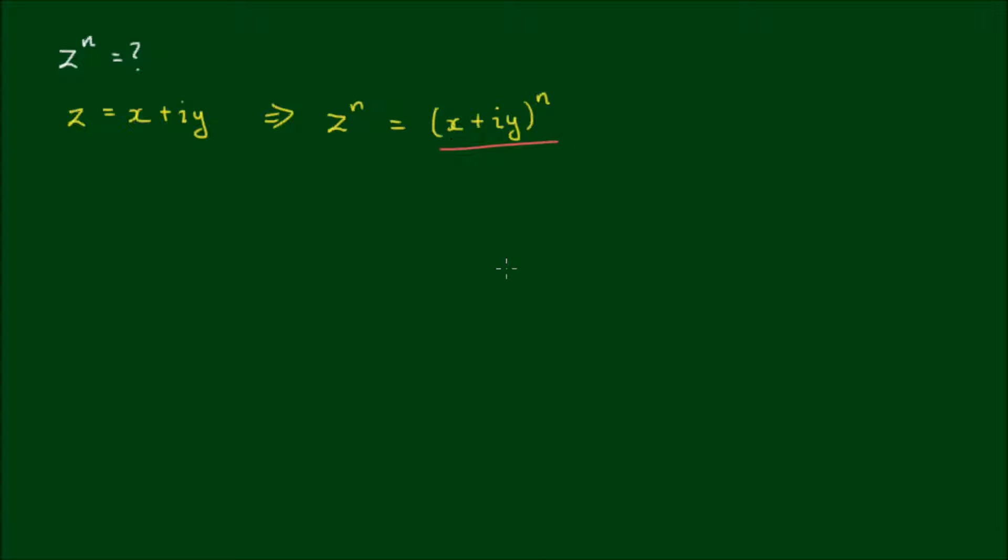And to evaluate this, I would have to perform binomial expansion. So x plus iy to the power of n is equal to the sum from k equals 0 to n of n choose k times x to the power of n minus k by iy to the power of k.